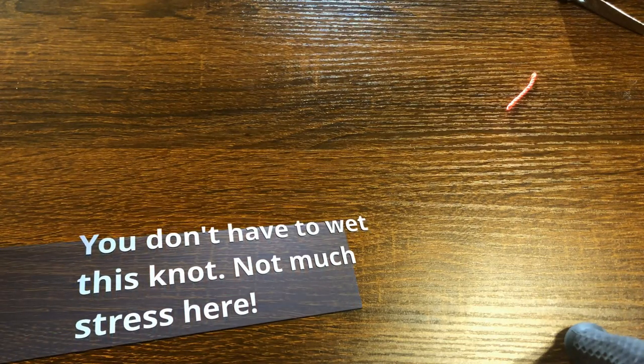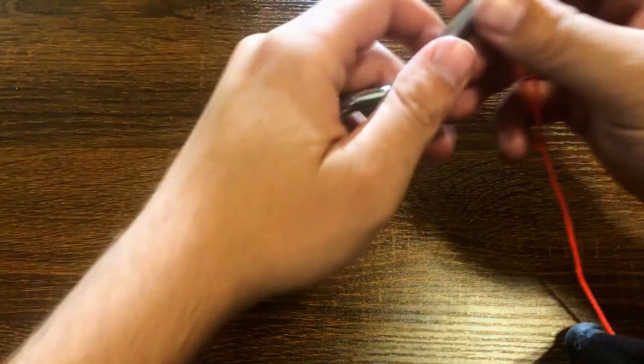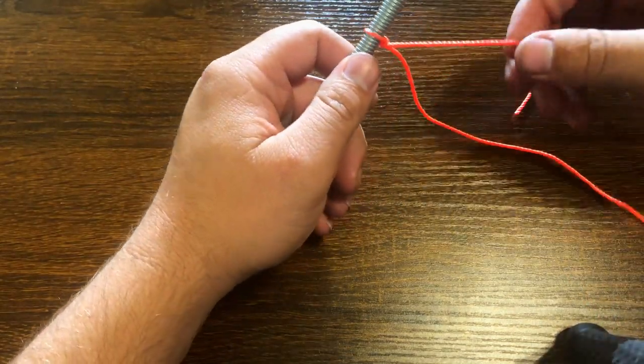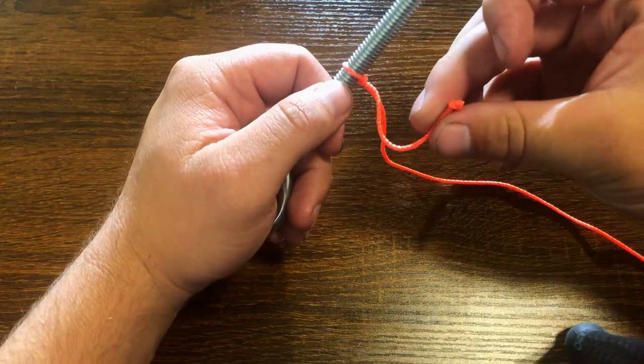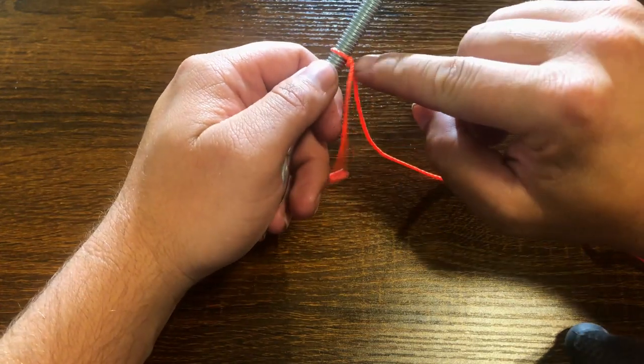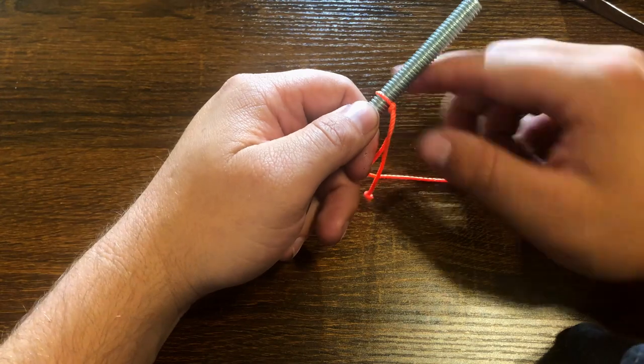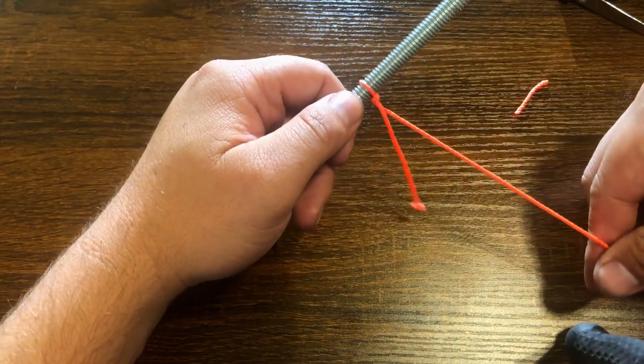No I'm not gonna be able to actually cinch it all the way down. Too much friction in the knots here. But normally this guy right here will pull all the way down to your spool and you'll have a nice tight line here.